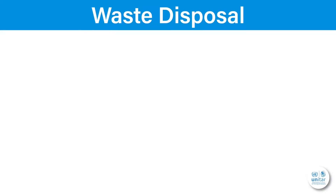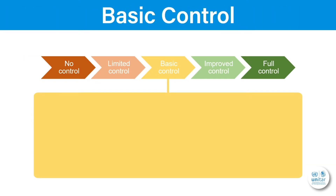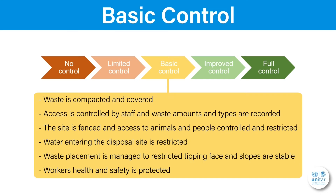According to the Waste Wise Cities tools, there are five levels of control in waste disposal, starting from no control up to full control. A minimum requirement is that at least basic control must be achieved. Everything below that is unacceptable and should be improved as urgently as possible.